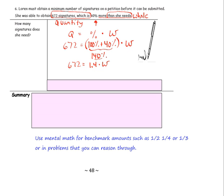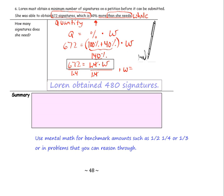Divide by the coefficient 1.4. A number divided by itself equals 1, and that leaves us with w. And then 672 divided by 1.4 will give us our answer. And the answer is 480 signatures.